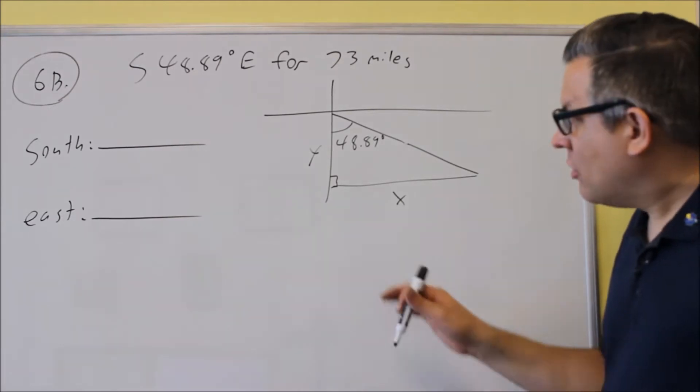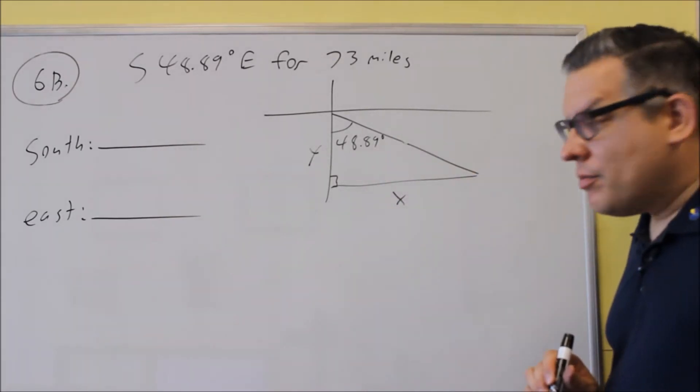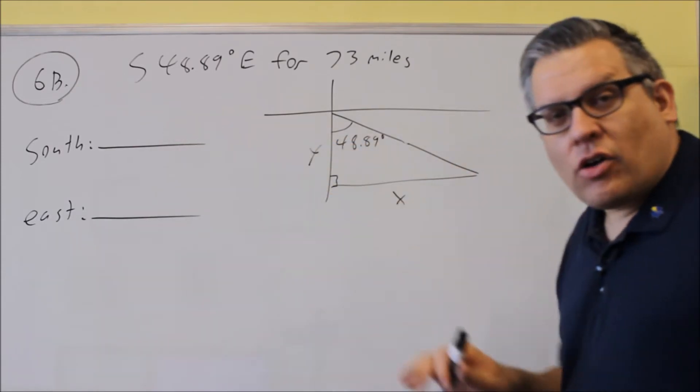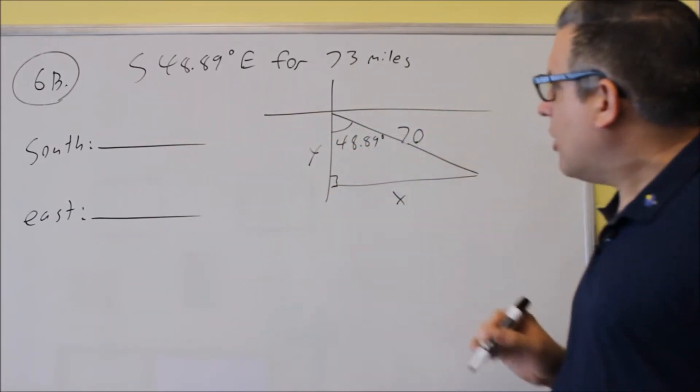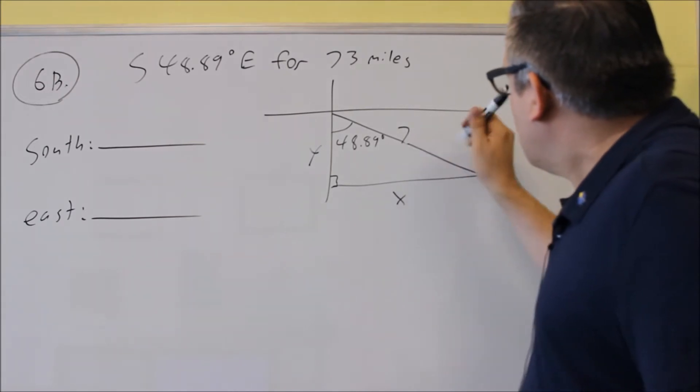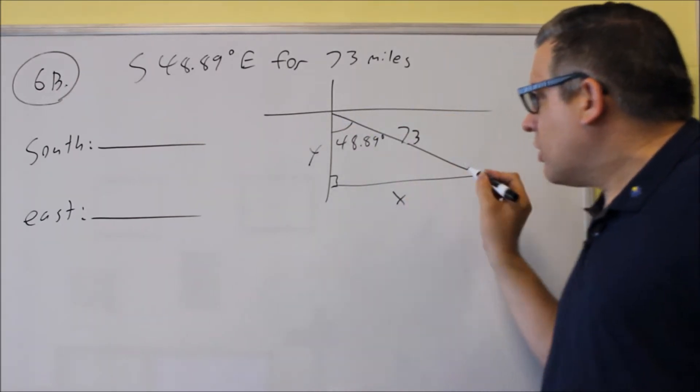So now we want to set up a trig function based on what we have here. First thing, let's go for the south. If we're going to go for the south, and by the way, this is 73 miles here. Okay, so 73 is going to be how far it goes.